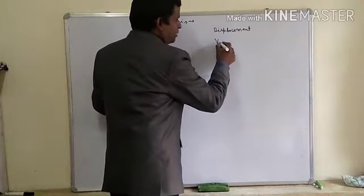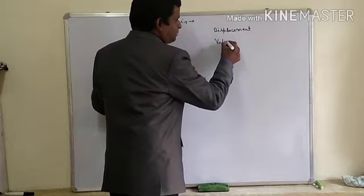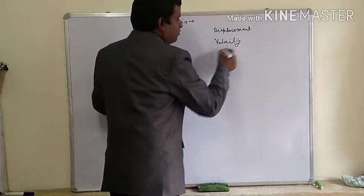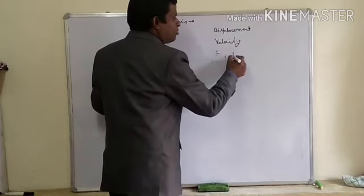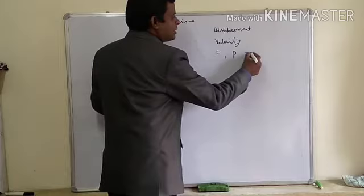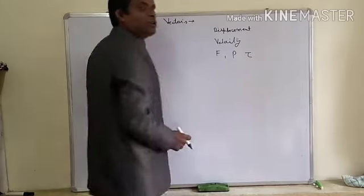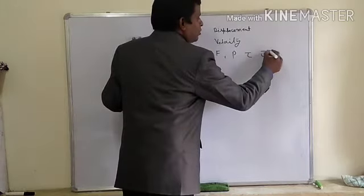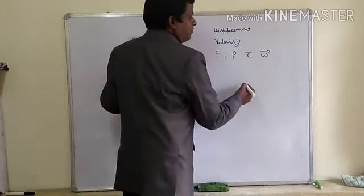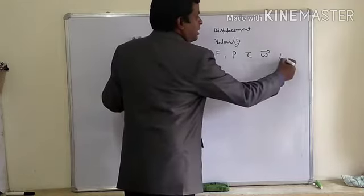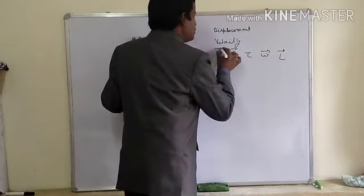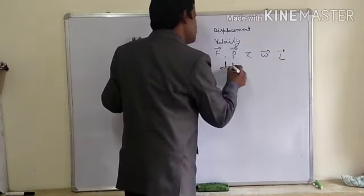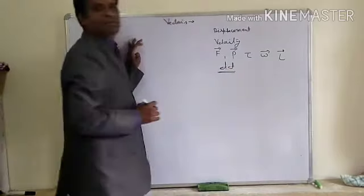Velocity is a vector quantity. Force is a vector quantity. Momentum is a vector quantity. Torque is a vector quantity. Angular velocity is a vector quantity. Angular momentum is a vector quantity. A lot of vector quantities are there in physics.